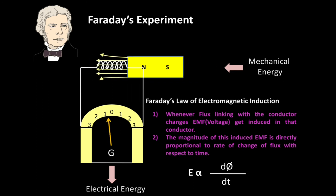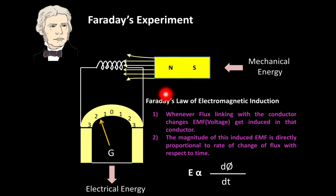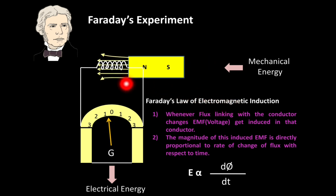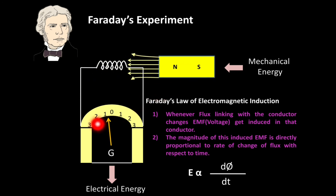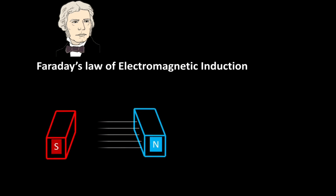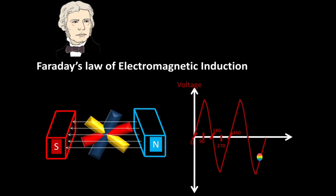From this it is clear that mechanical energy is getting converted into electrical energy, so we can have electricity. Electricity is generated using this law, which is the conclusion of Faraday's experiment. Wherever you go in the world, electricity is generated just by using Faraday's Law of Electromagnetic Induction. From this experiment and law, it is clear that the direction of induced EMF or induced current changes after a certain time interval.